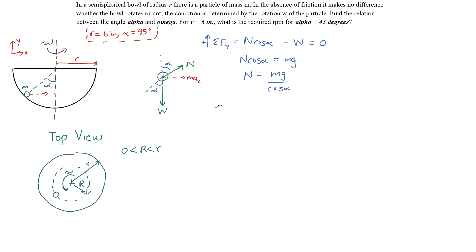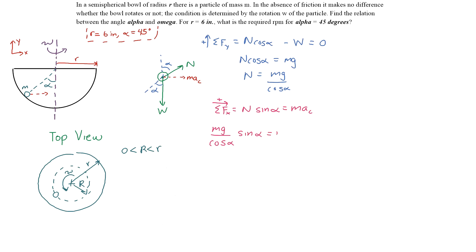Summing forces in the x direction, where inward is positive: N·sin(α) equals mass times centripetal acceleration — that's the red dashed arrow. Plugging in N = mg/cos(α), we get (mg/cos(α))·sin(α) = m·a_c. Since the particle spins at omega, we convert rotational to linear velocity using big R: the centripetal acceleration equals v²/R, and v = ω·R, so this becomes m·ω²·R.